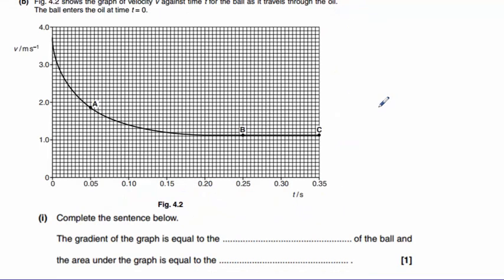Part B shows us a velocity-time graph of the ball as it travels through the oil. We can see here that the ball's velocity is getting lower as time goes by. And we need to complete these sentences.